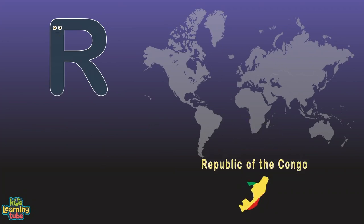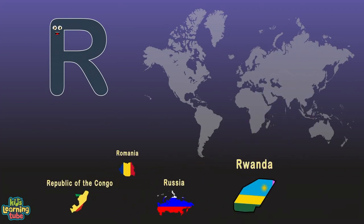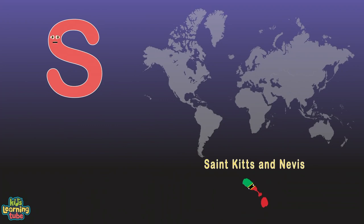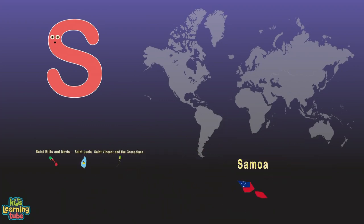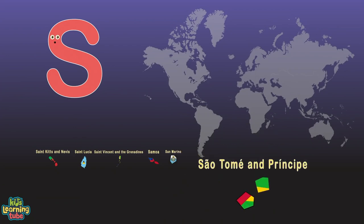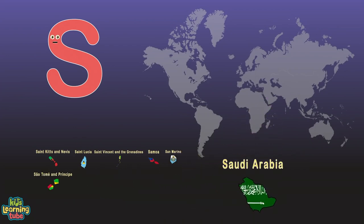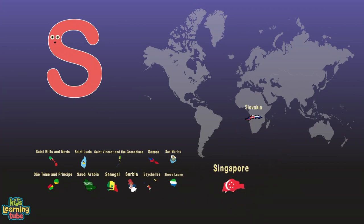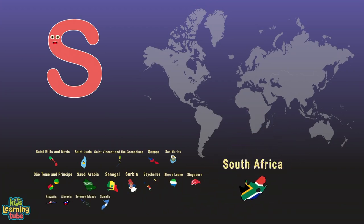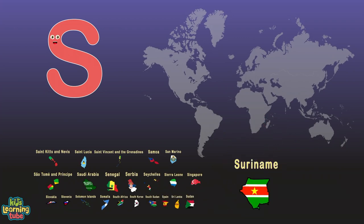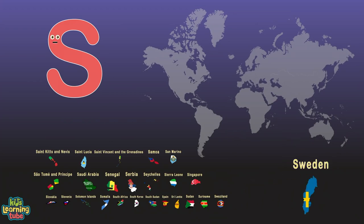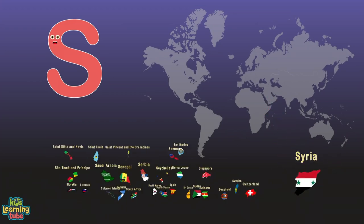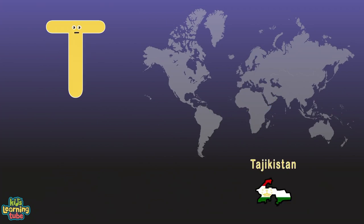R is for Republic of the Congo, Romania, Russia, and Rwanda. S is for St. Kitts and Nevis, St. Lucia, St. Vincent and the Grenadines, Samoa, San Marino, São Tomé and Príncipe, Saudi Arabia, Senegal, Serbia, Seychelles, Sierra Leone, Singapore, Slovakia, Slovenia, Solomon Islands, Somalia, South Africa, South Korea, South Sudan, Spain, Sri Lanka, Sudan, Suriname, Swaziland, Sweden, Switzerland, and Syria.